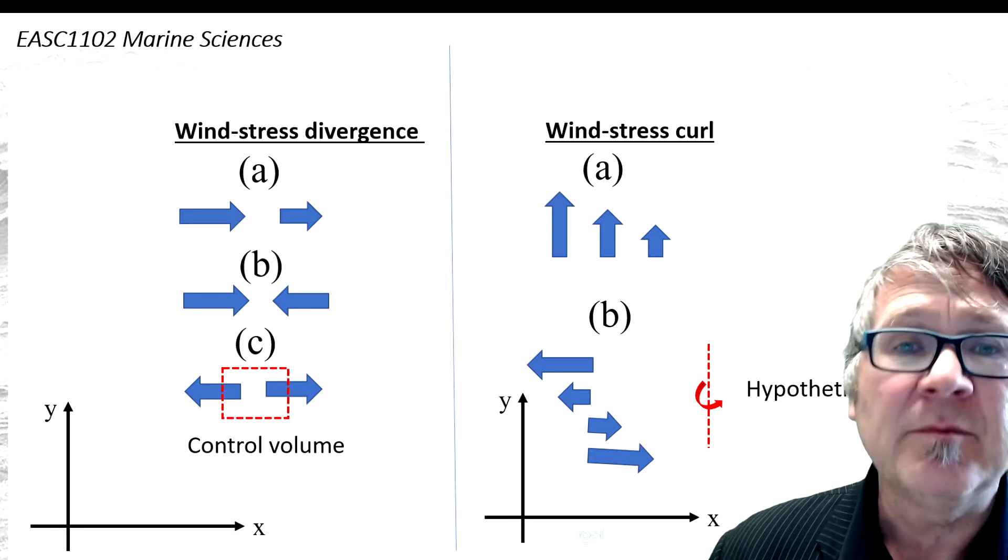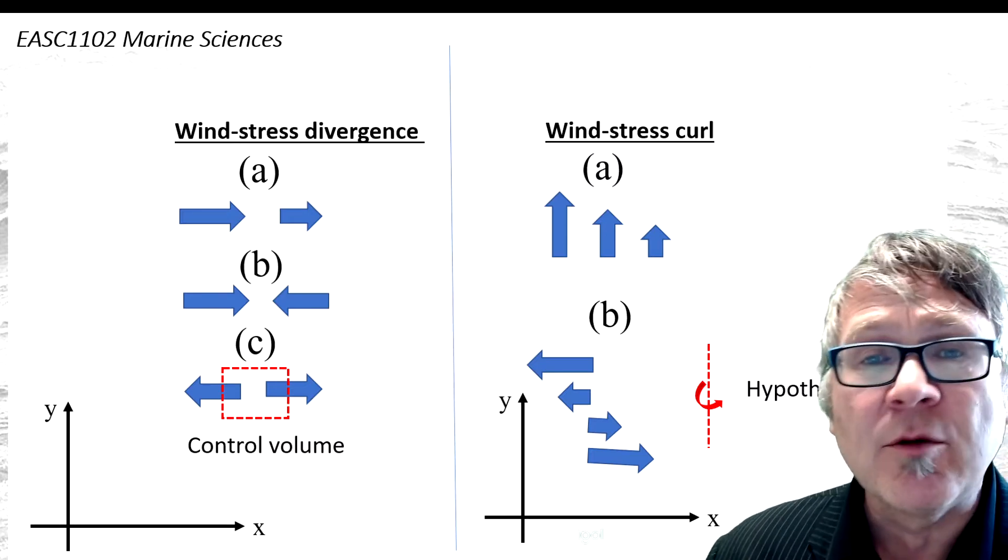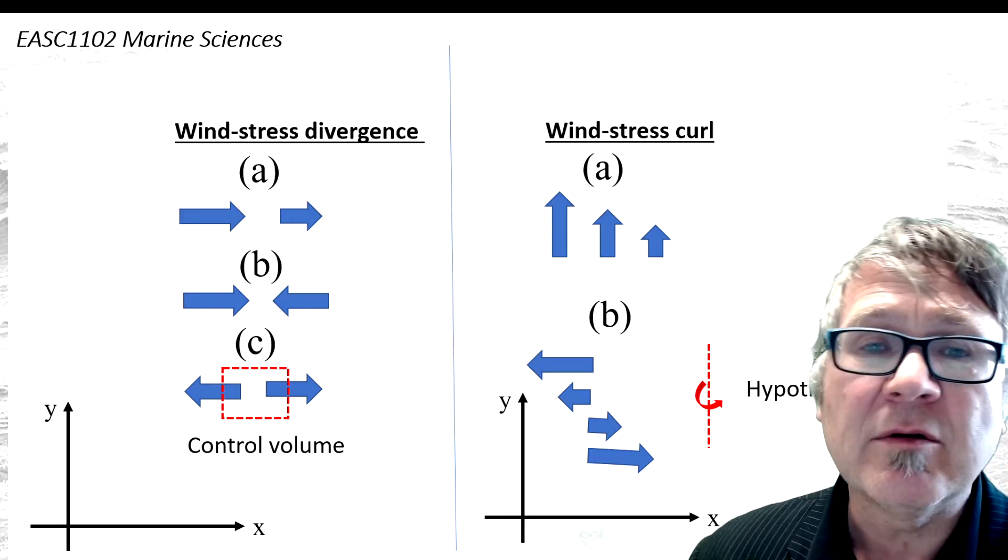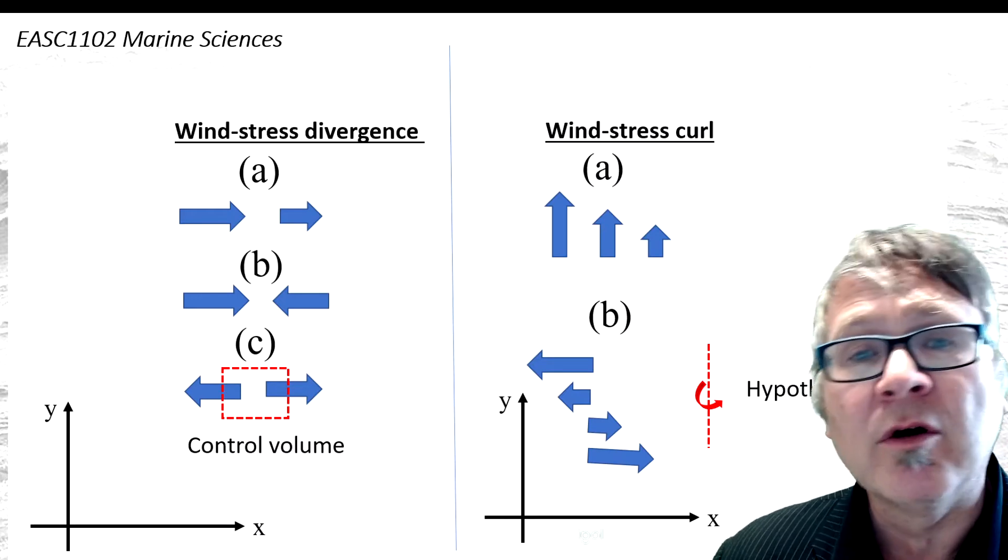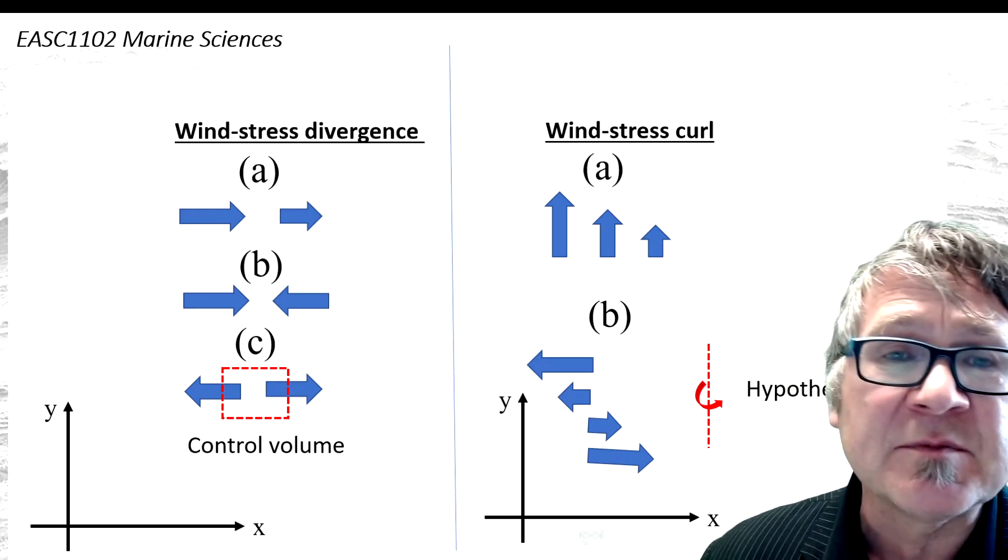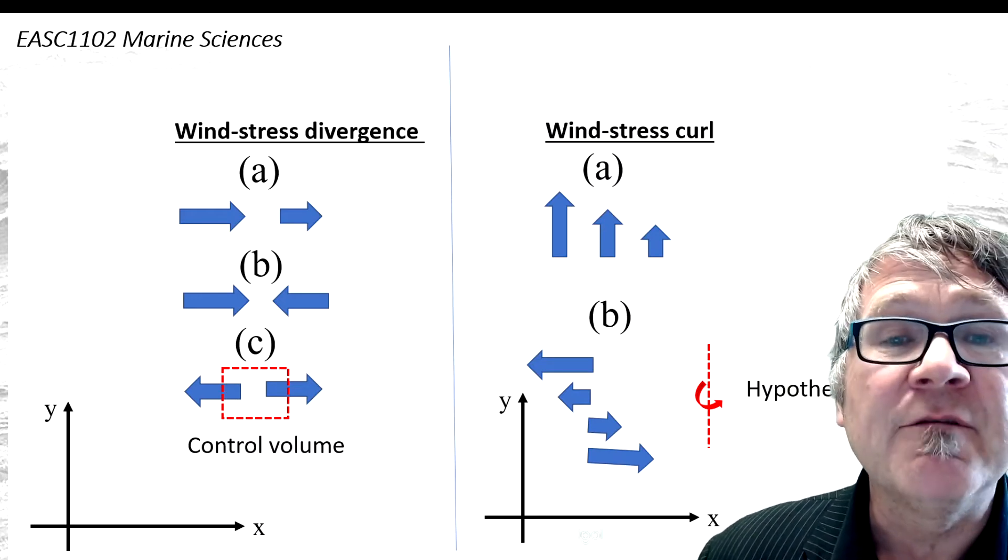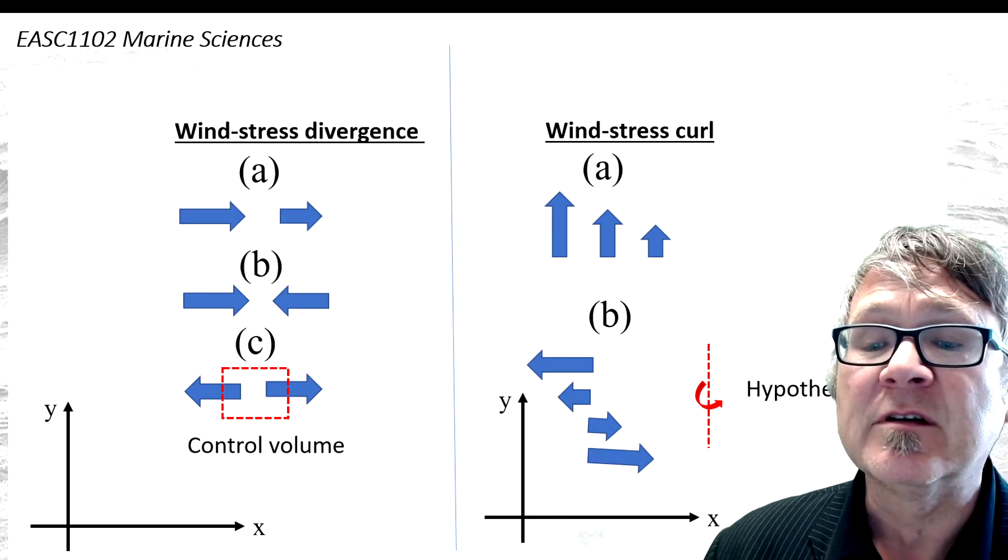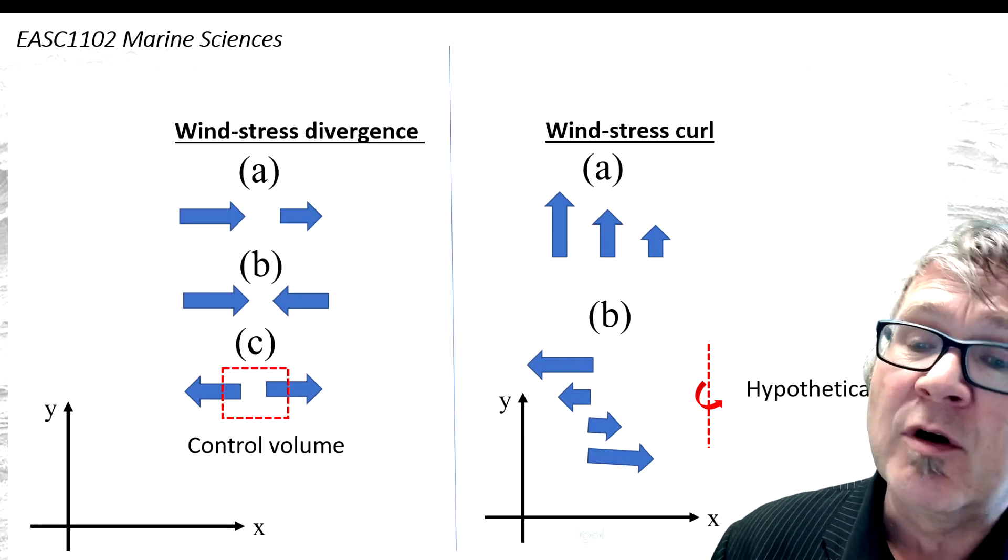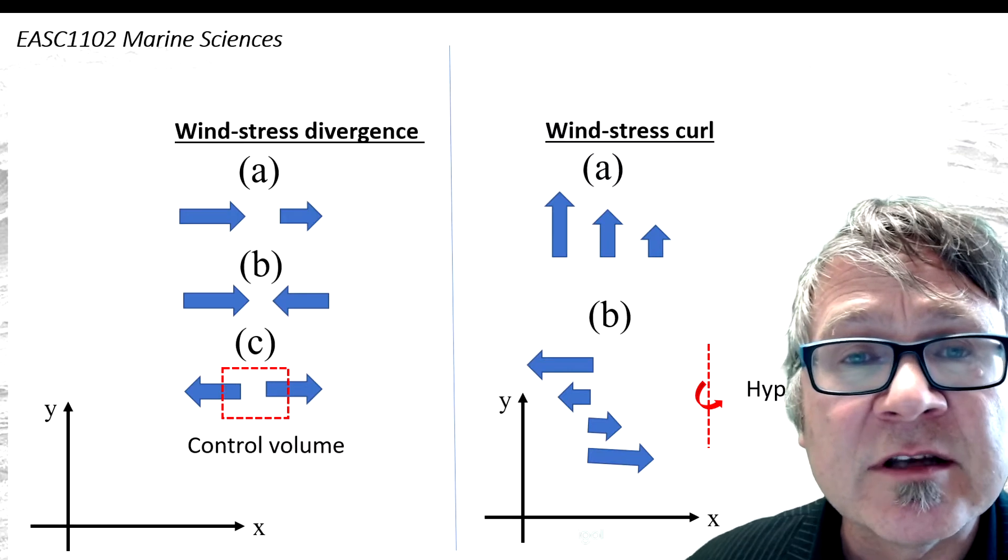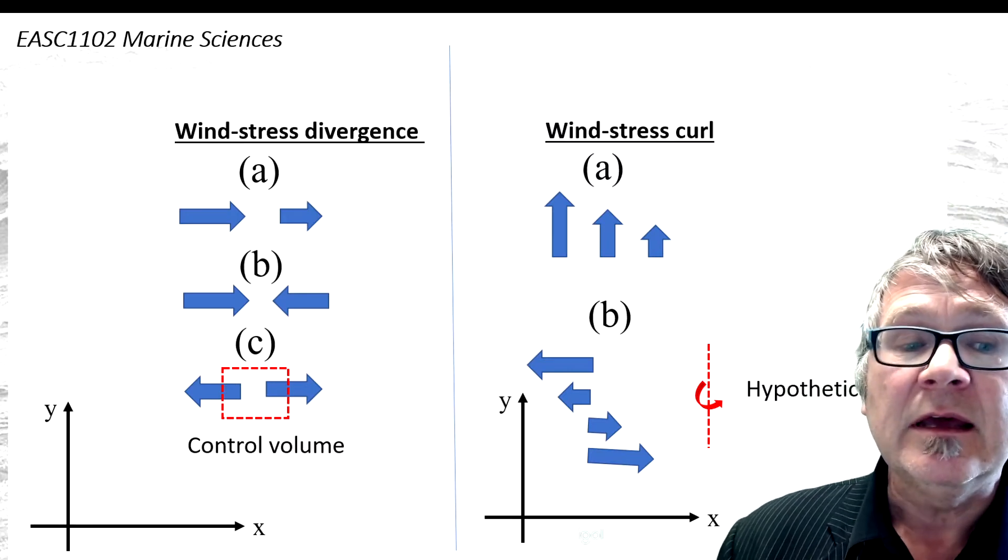Because air is largely incompressible, this horizontal divergence or convergence must be balanced by vertical air movement. We already discussed convergence and divergence in the context of the intertropical convergence zones.